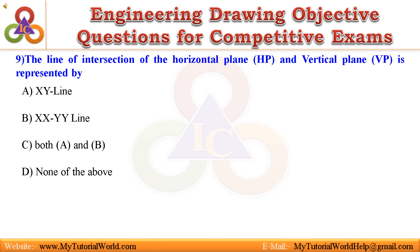Question 9. The line of intersection of the horizontal plane (HP) and vertical plane (VP) is represented by: A. Z line, B. XY line, C. Both A and B, D. None of the above. Answer is Z line.